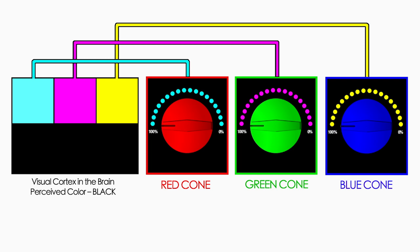In other words, the red cone sends a complementary cyan signal, the green cone sends a magenta signal, and the blue cone sends a yellow signal to the brain that combine to form black. Cyan plus magenta plus yellow equals black.